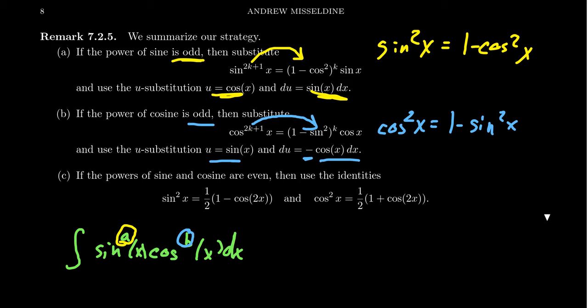Now, what if the power of sine and cosine are both odd? Well, then you get to pick. You can do whichever one you want. Isn't life great when you have choices?